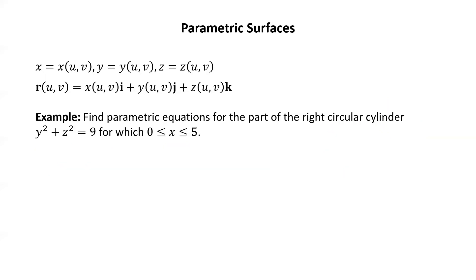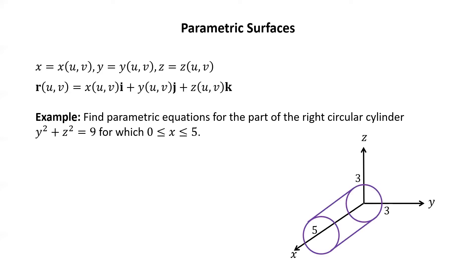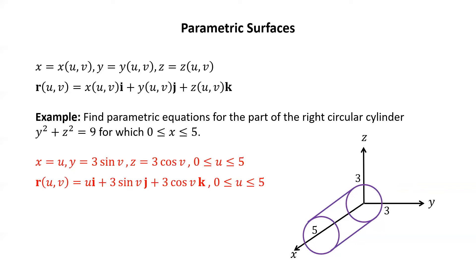Another example: find parametric equations for the part of the right circular cylinder y squared plus z squared equals 9, for which x is between 0 and 5 inclusive. Pause the video and try to write down the appropriate parametric equations as well as the corresponding vector-valued function. Here's a picture of that right circular cylinder — notice it's extending from x equals 0 to x equals 5. Since x is not involved in the equation at all, we let x be one of the parameters: x equals u. Then y equals 3 sine v and z equals 3 cosine v. The corresponding vector-valued function is r of uv equals ui plus 3 sine v j plus 3 cosine v k, where u is going from 0 to 5 inclusive.